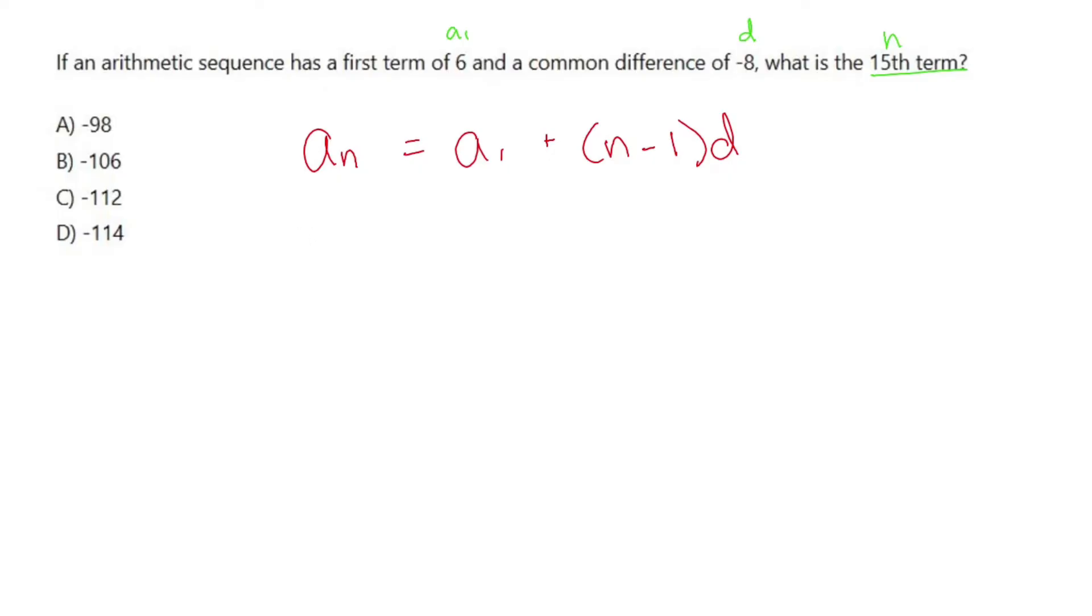So if we want to find the 15th term, we're going to do a sub 15 equals a sub 1, the first term, plus n, which we already called 15, minus 1, times d, which we called negative 8.